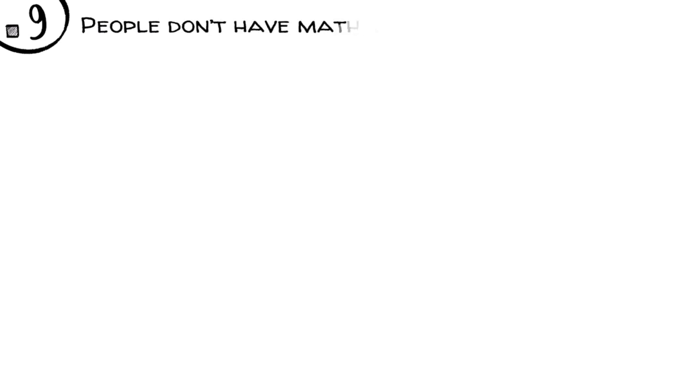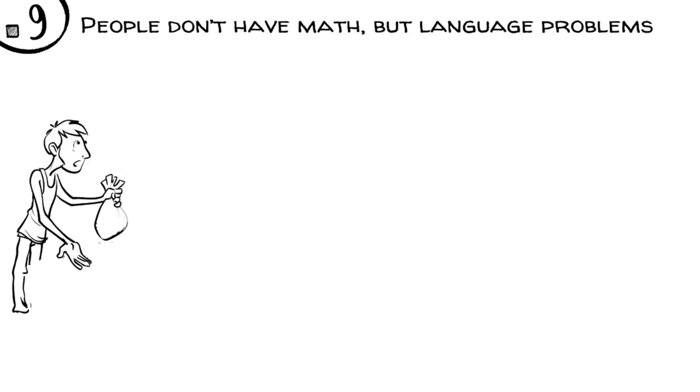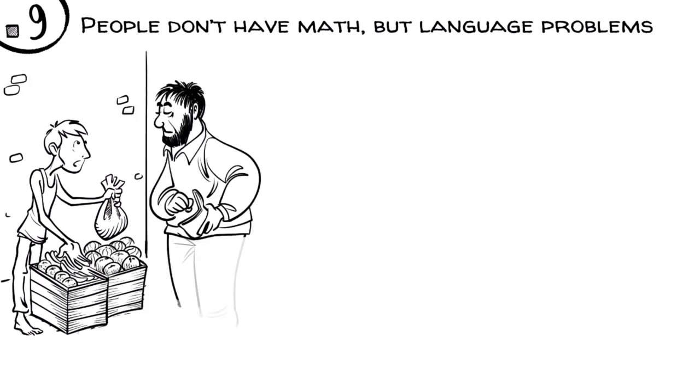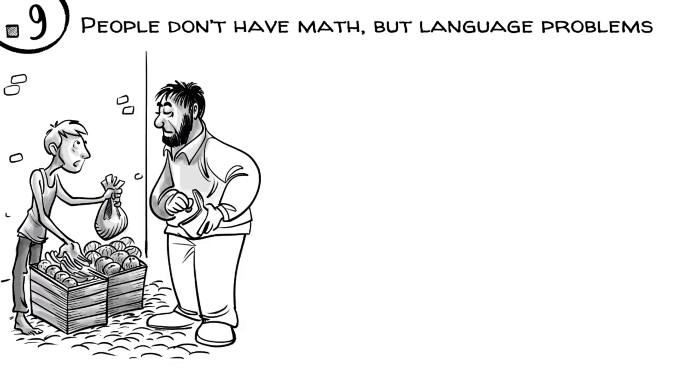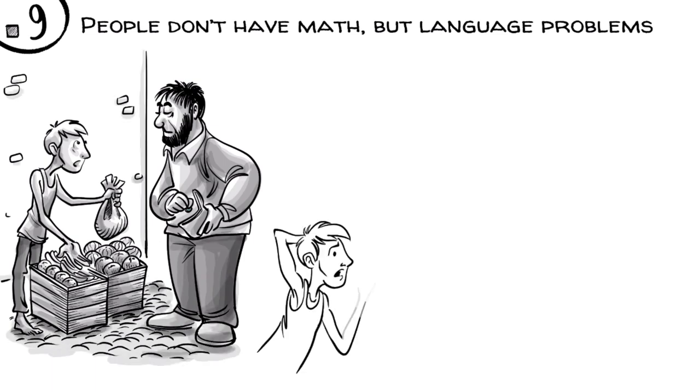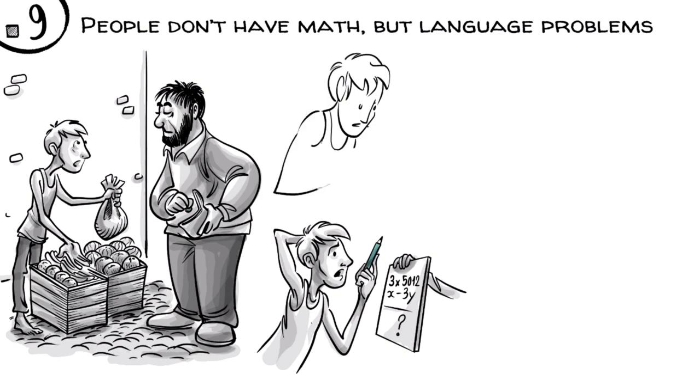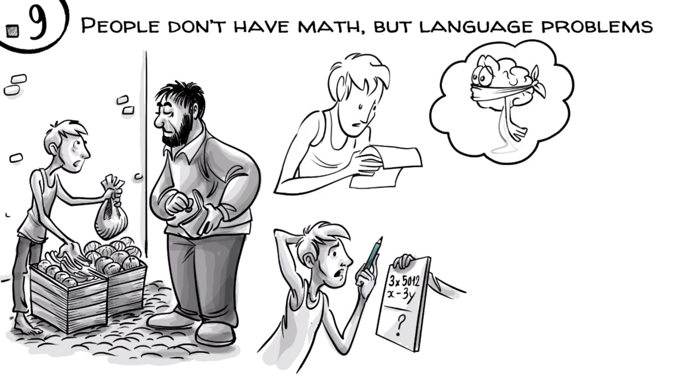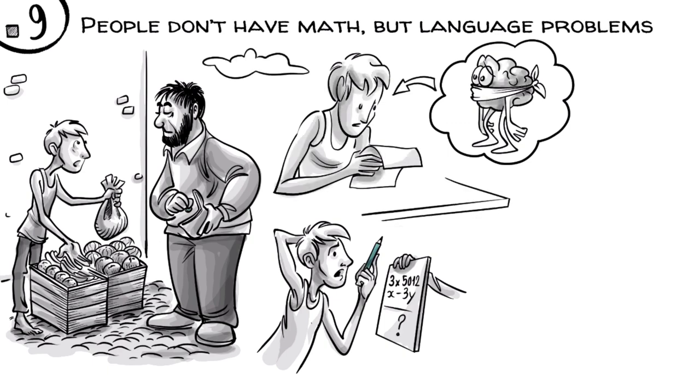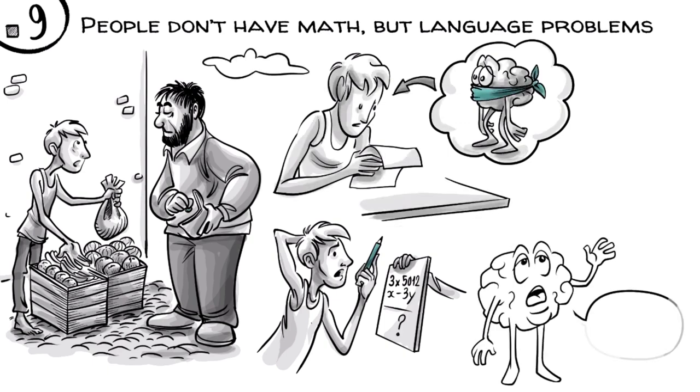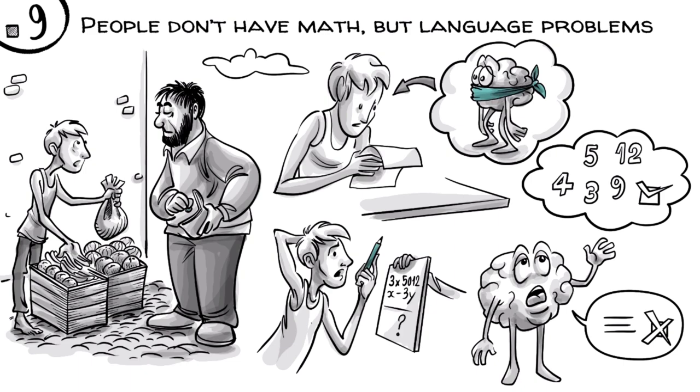Most people don't have math but language problems. We know, for example, that eleven-year-old unschooled street vendors are often highly proficient in complex money transactions but incapable of doing paper and pencil arithmetic. This phenomenon, known as street mathematics, shows that when smart kids struggle in school, they often just can't express their thinking in symbols. Their brains can do math but have language problems.